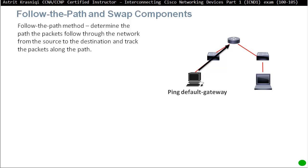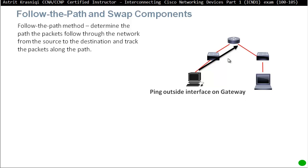Follow the path is a great method — determine the path a packet takes through the network from source to destination and track packets along the path. For example, if this PC cannot ping a laptop, first go to the PC and ping yourself at 127.0.0.1 to confirm TCP/IP is correctly configured. Then do an ipconfig, find the gateway IP address, and ping it to check LAN communication. If that's successful, ping the router's outside interface. If that's successful but you still can't ping the destination, the problem is further down the path.